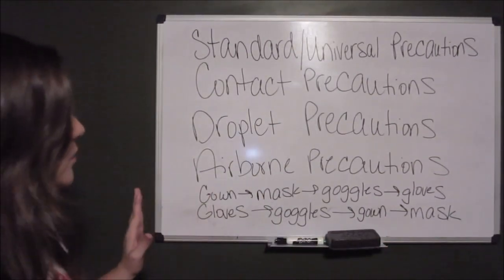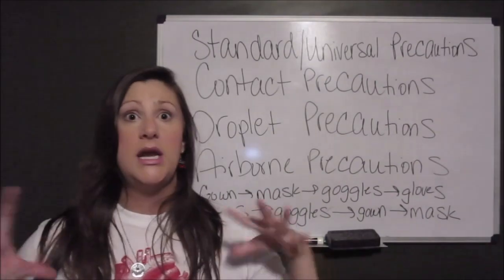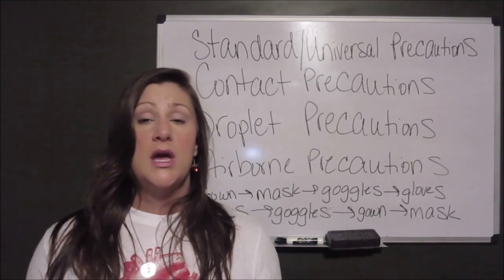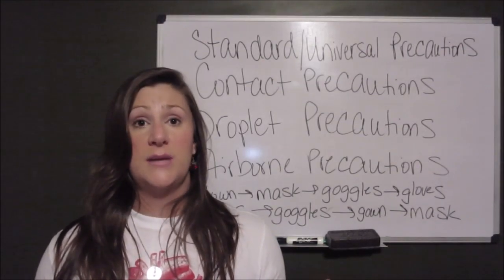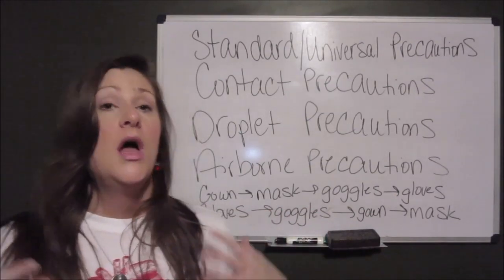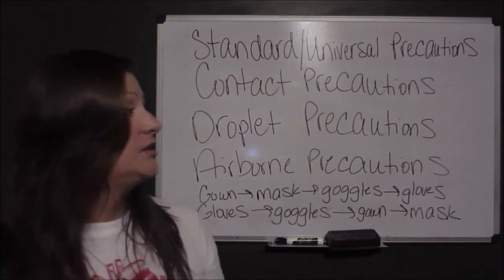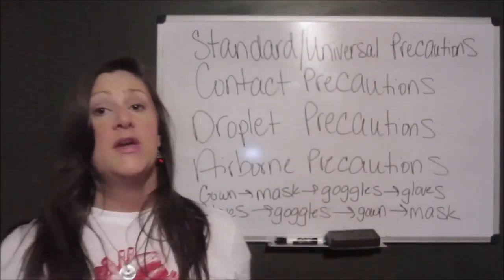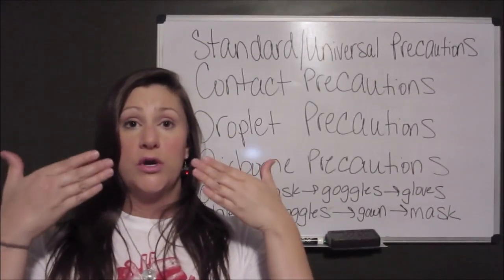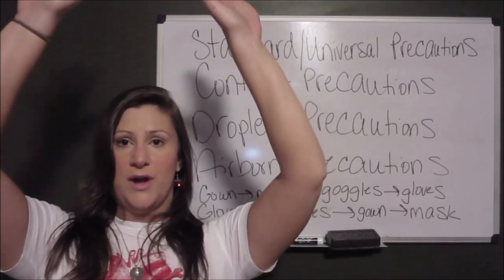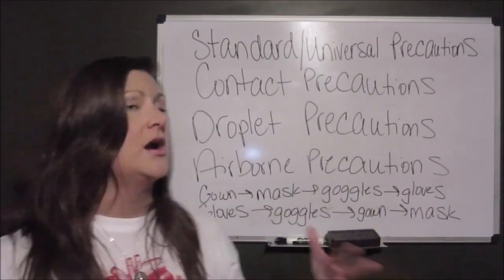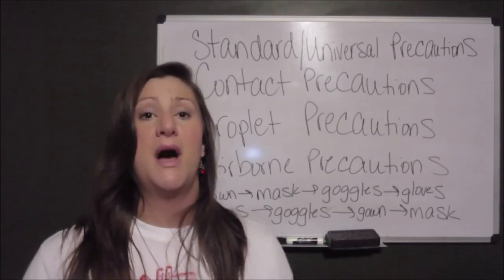Finally, let's touch on the donning and doffing of your PPE. This is something you'll encounter in fundamentals of nursing, and you will definitely see these types of questions on NCLEX. Here's an easy way to remember putting on PPE — you're going to do it from the bottom up. When putting it on: gown first, then your mask or respirator, then your goggles, and then your gloves. Donning PPE goes from the bottom up.